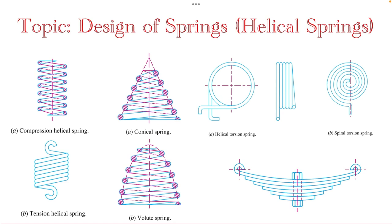Springs are used in dampers, or to apply forces in brakes, clutches, or spring-loaded valves. They also find application in controlling the motion and maintaining contact between two elements such as cam and followers. Springs are used for measuring forces in spring balances, in toys and watches, and to store energy we use spiral torsion springs.